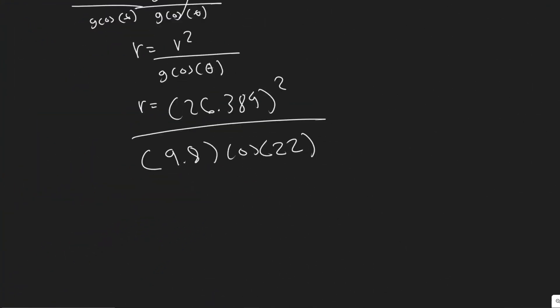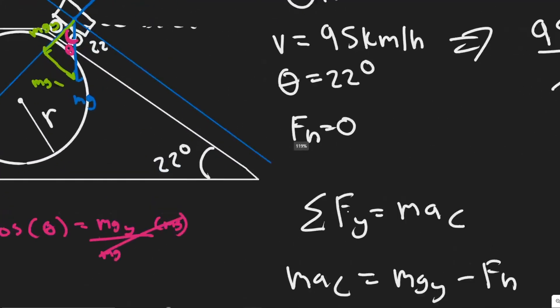go ahead and plug in your calculator. And let's see what we get. So plugging it in, you will get 76.64. And then we're dealing with meters here since we're dealing with a distance. So the minimum value of your radius is 76.64 meters,